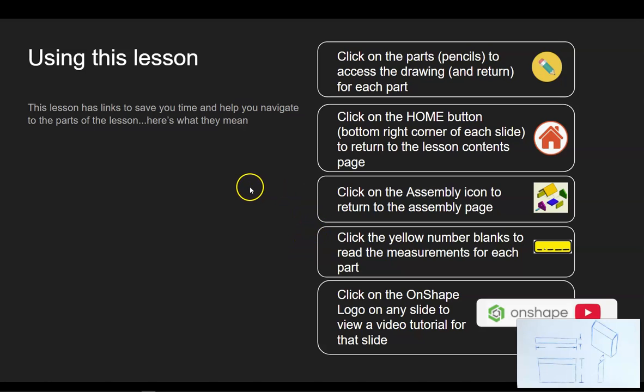Let's go over some of the tools and functions you see here. This is meant to be an interactive slideshow. The slides are not meant to be read directly in a straight line like pages in a book. There are buttons on each slide that will allow you to navigate back and forth. The pencil button links you back and forth between drawings, the home button will get you to the table of contents, and the exploded assembly icon will get you back to the main exploded assembly page.